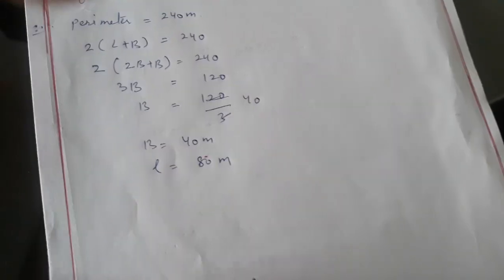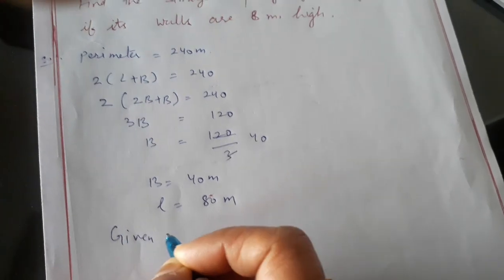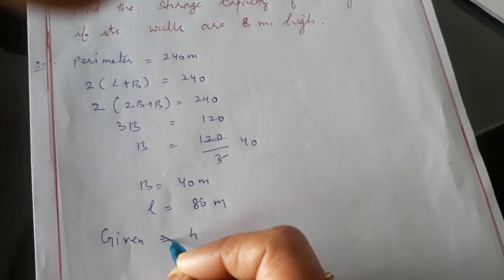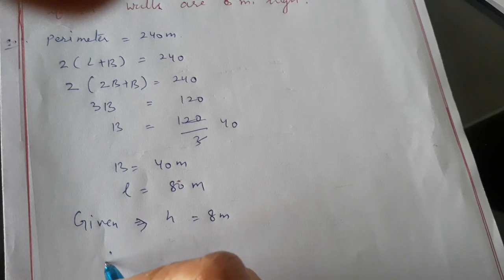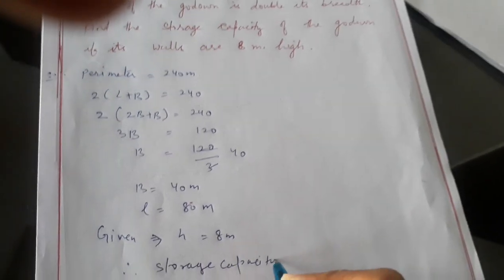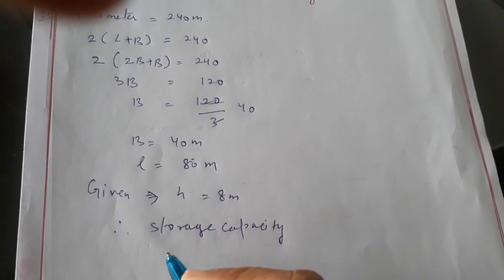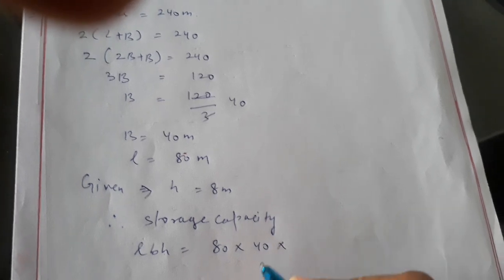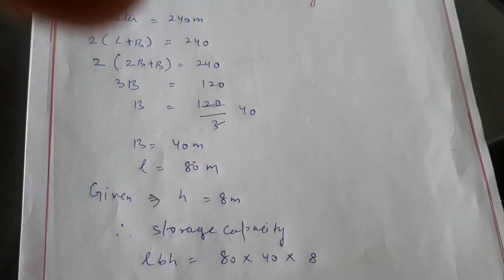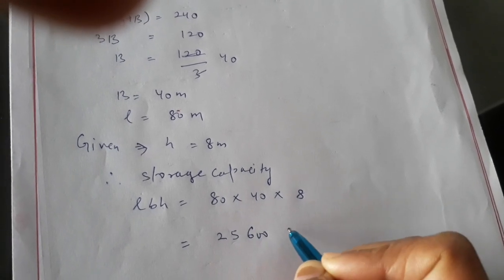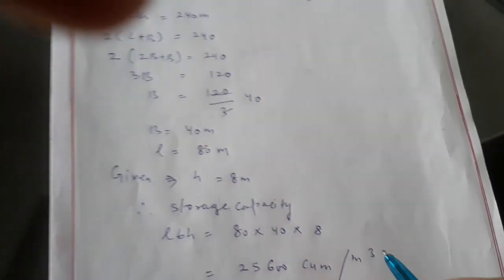Now, what is given to us is height, which is 8 meters. Therefore, storage capacity would be equal to length into breadth into height, that is 80 into 40 into 8, which equals 25,600 cubic meters.